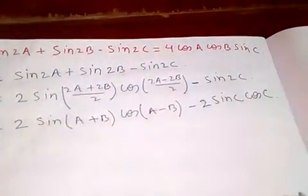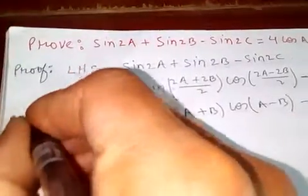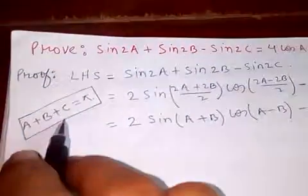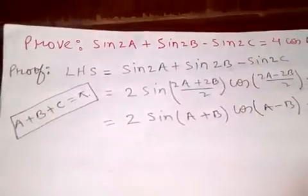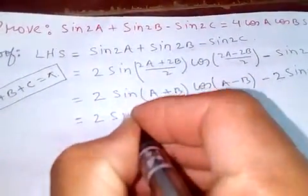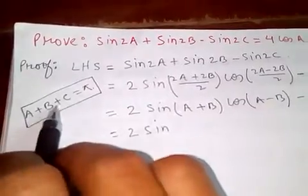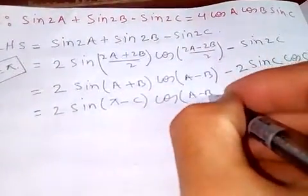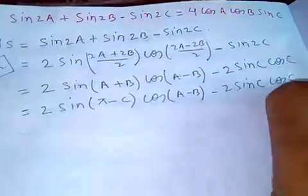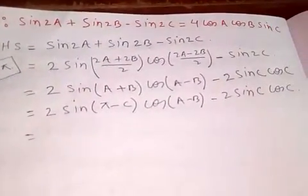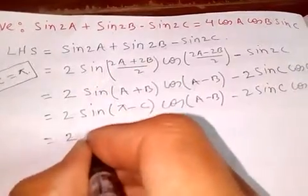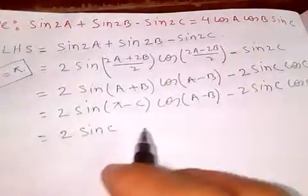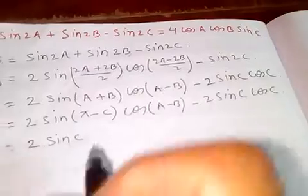We assume A plus B plus C equals pi, because in any triangle the sum of angles is 180 degrees, which is pi in radians. So A plus B equals pi minus C. Therefore 2 sine((A+B)/2) becomes 2 sine((pi minus C)/2), and sine(pi minus C) equals sine C. Taking 2 sine C common, we get the expression simplified.